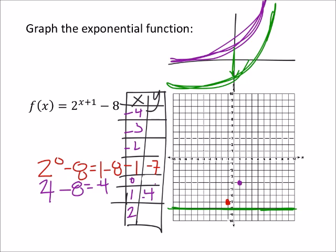Let's try where x is 0, that'd be better. 2 to the power of 0 plus 1 is 2. 2 minus 8 is negative 6. So 0, negative 6, that looks a lot better.